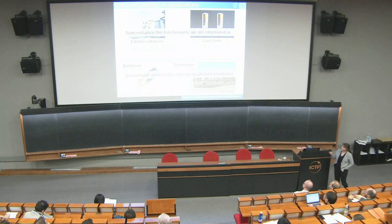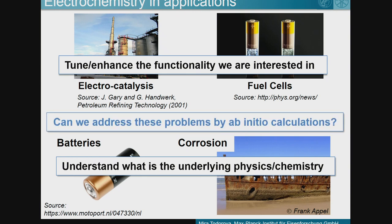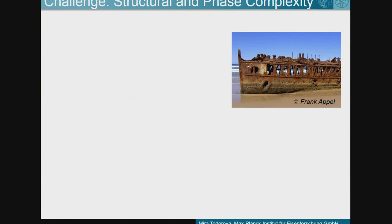If we want to tune or enhance the functionality of any of these processes, or even try to suppress corrosion, we need to understand the underlying mechanisms starting from the atomistic scale and really knowing what's going on. Density functional theory has been extremely helpful in providing insight, complementing experiment in many materials problems. The question is: can we also use ab initio calculations to address problems in electrochemistry? The problem close to my heart is corrosion, since I'm working in an institute for iron and steel research.